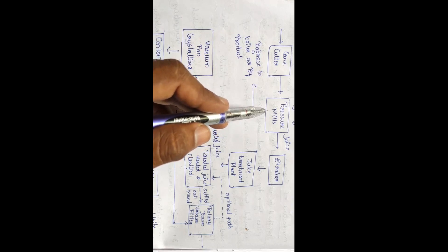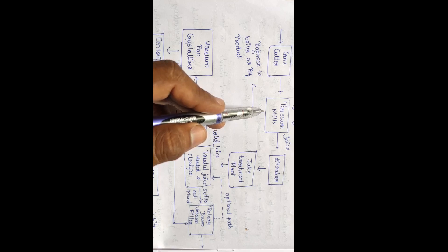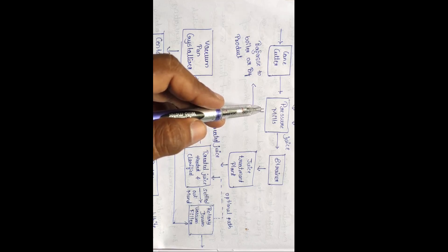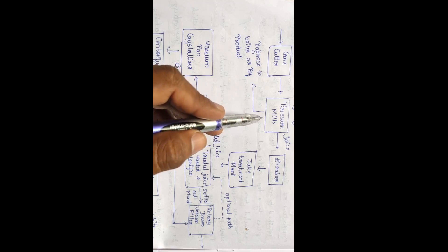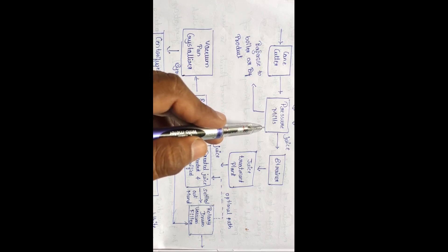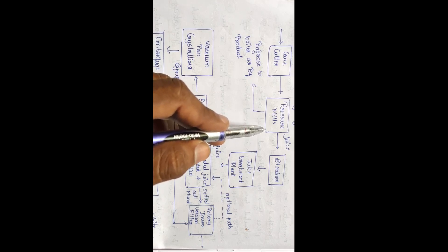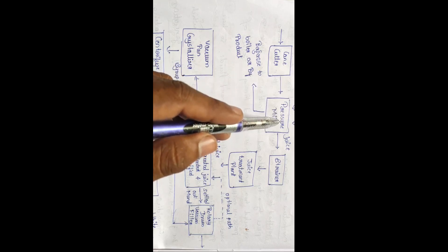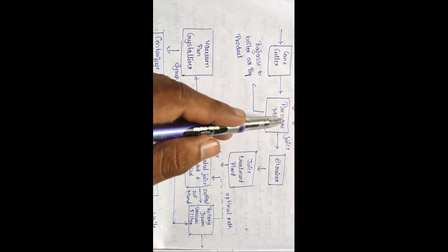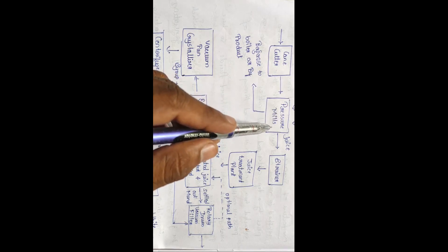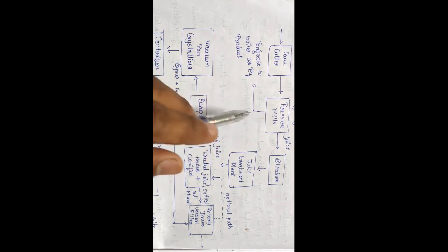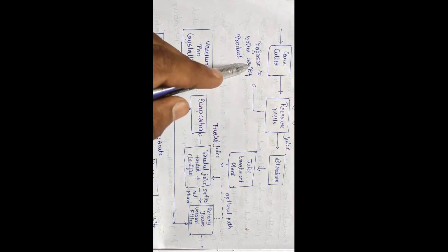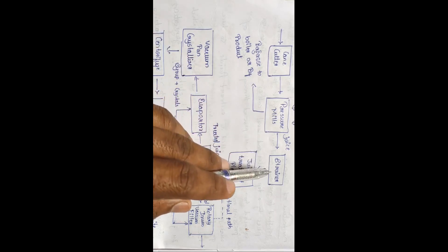In the pressure mill, there is a series of pressure mills. Each pressure mill consists of three grooved rolls which exert heavy pressure. Thus, 93 percent of the juice is extracted from the cane. The unwanted waste material exits, and the juice enters the strainer.